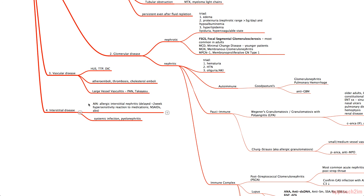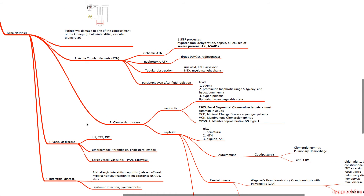Lastly within intrinsic AKI, there is interstitial disease. Allergic interstitial nephritis is a delayed two-week hypersensitivity reaction to medications — often NSAIDs and antibiotics. Systemic infection and pyelonephritis can also cause interstitial AKI. That covers the full intrinsic AKI differential.